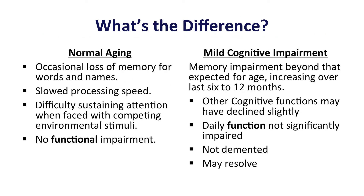Before moving on, I'd like to review the difference between normal aging, mild cognitive impairment, and dementia. In normal aging, it's common for individuals to occasionally have loss of memory for words and names, to have slowing of their processing speed, and to have difficulty sustaining attention, especially when faced with competing environmental stimuli. But there is no functional impairment.